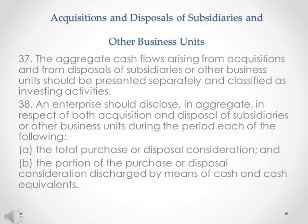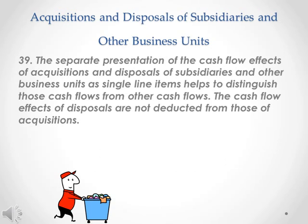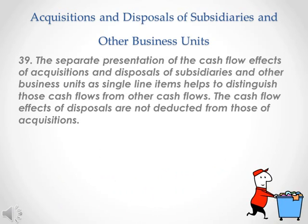Para 37. The aggregate cash flows arising from acquisitions and from disposals of subsidiaries or other business units should be presented separately and classified as investing activities. Para 38. An enterprise should disclose in aggregate in respect of both acquisition and disposal of subsidiaries or other business units during the period each of the following: A. the total purchase or disposal consideration; and B. the portion of the purchase or disposal consideration discharged by means of cash and cash equivalents. Para 39. The separate presentation of the cash flow effects of acquisitions and disposals of subsidiaries and other business units as single line items helps to distinguish those cash flows from other cash flows. The cash flow effects of disposals are not deducted from those of acquisitions.